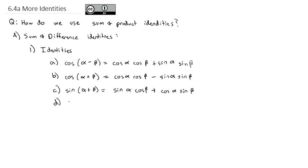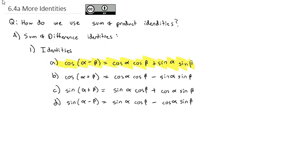And finally, we saw that the sine of a difference — alpha minus beta — is equal to the sine of the first angle times the cosine of the second angle minus the cosine of the first angle times the sine of the second angle. So these four identities are our sum and difference identities that we're going to use here.